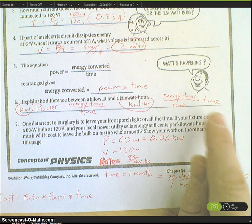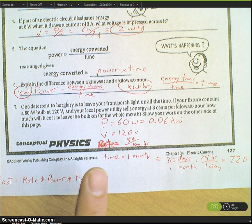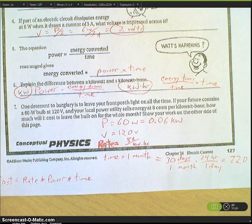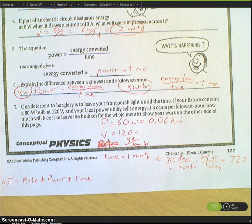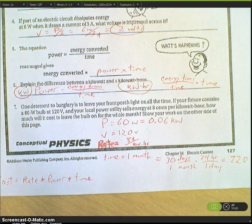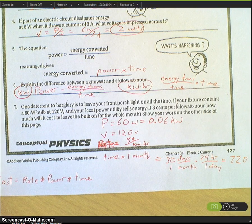This is what the electric company charges you for. You use x amount of energy, they charge you so many pennies for the amount of energy you use. Number seven: you leave a porch light on 24/7 and it's asking how much money does it cost you to run this in a month's time.